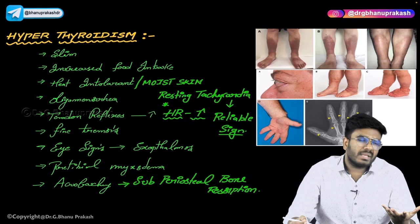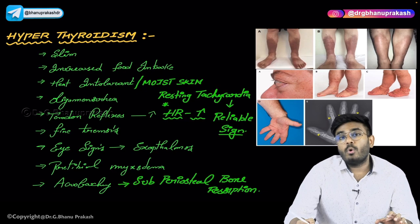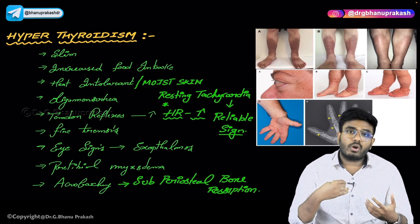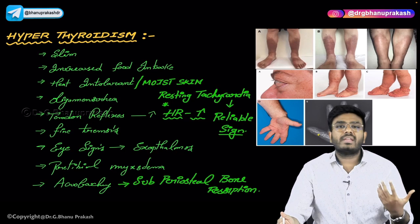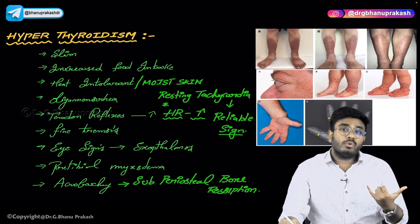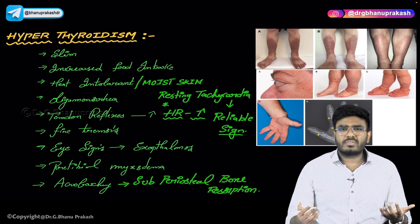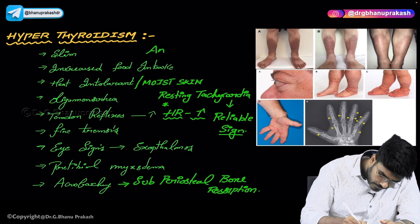Thyroid hormones are like sympathetic hormones — they activate your body and make you more alert. In hyperthyroidism, T3 and T4 act on the brain and make the person more anxious. These persons are very talkative; just by talking with them you can diagnose hyperthyroidism. As a good doctor, you can recognize this even on a phone call. These patients are anxious all the time — not depressed, but anxious and worried about small things.